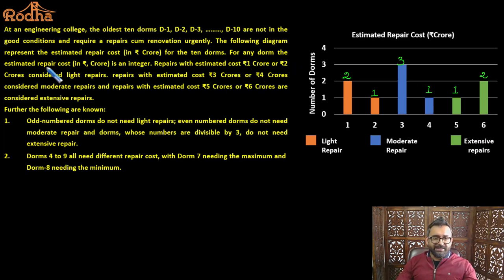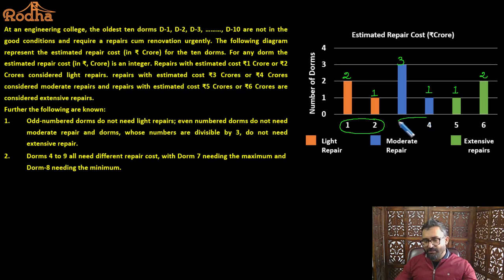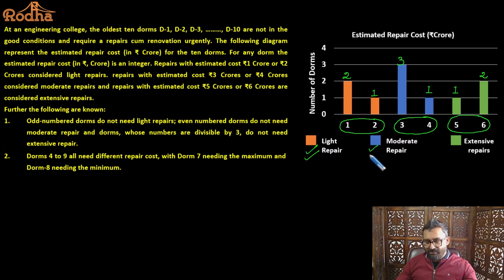For any DOM, the estimated repair cost is an integer. Repairs with estimated cost 1 crore or 2 crore are considered light repair. Repairs with estimated cost 3 crore or 4 crore are considered moderate repair. Repairs with estimated cost 5 crore or 6 crore are considered extensive repair.